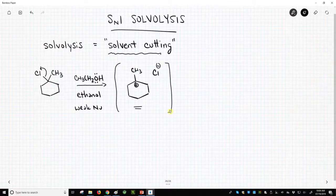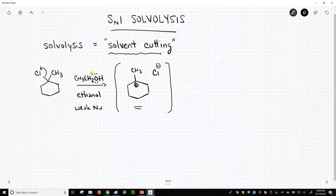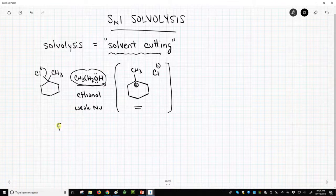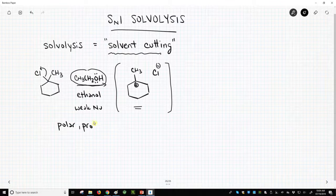What else is good for this carbocation? Well, we use methanol or ethanol as our solvent, an alcohol solvent, and this is a solvent. It's called a polar protic solvent, meaning it has an OH bond,